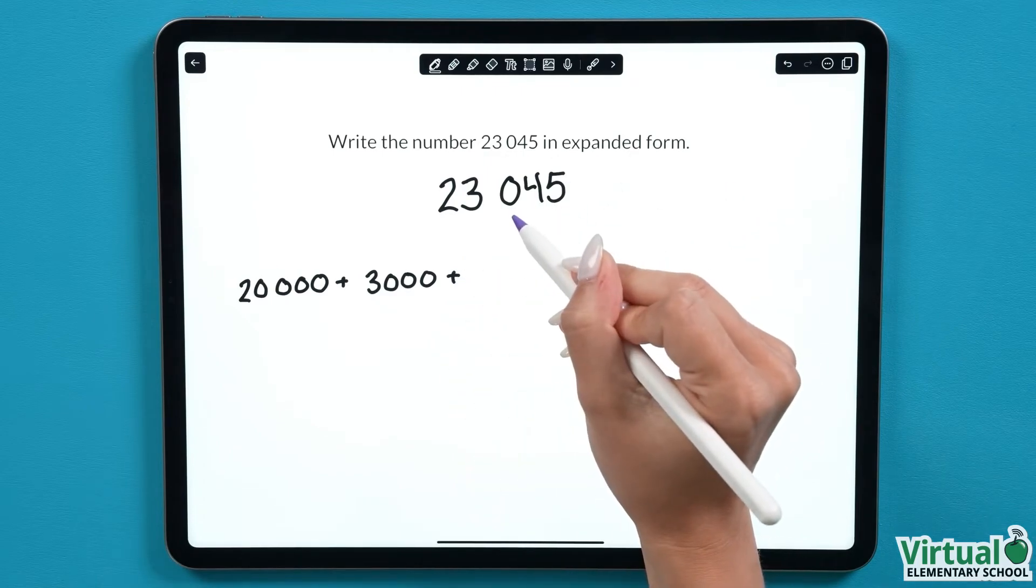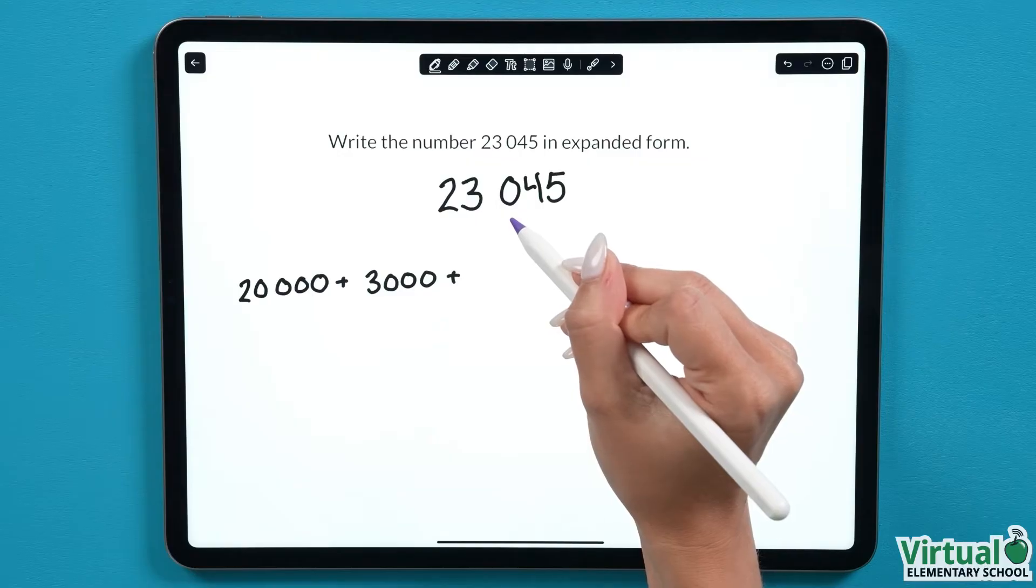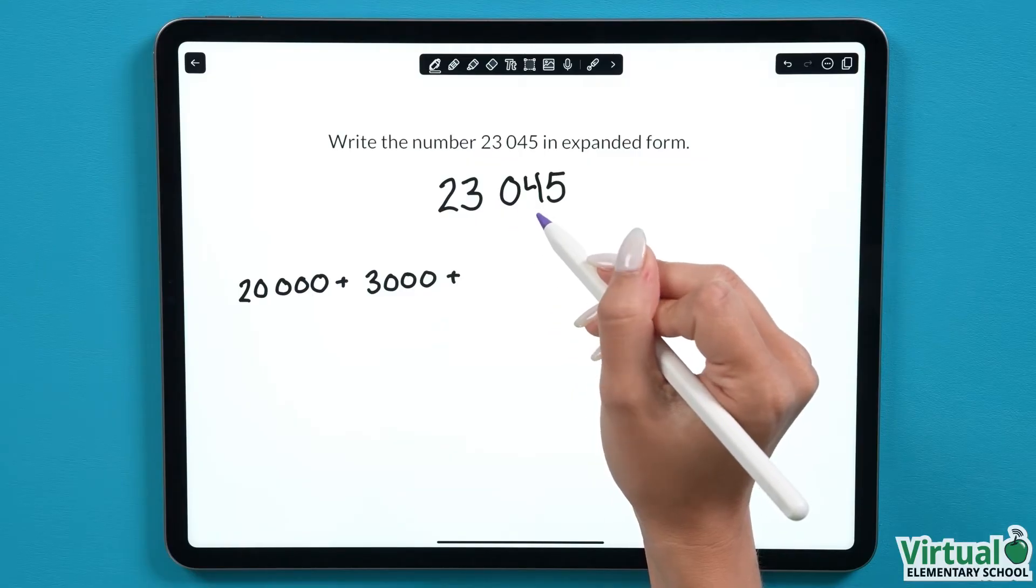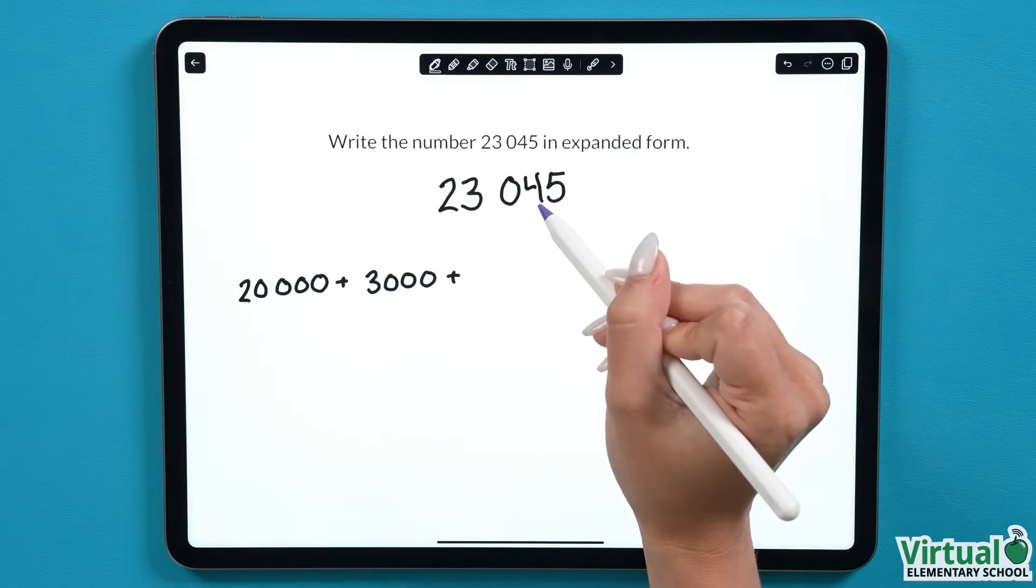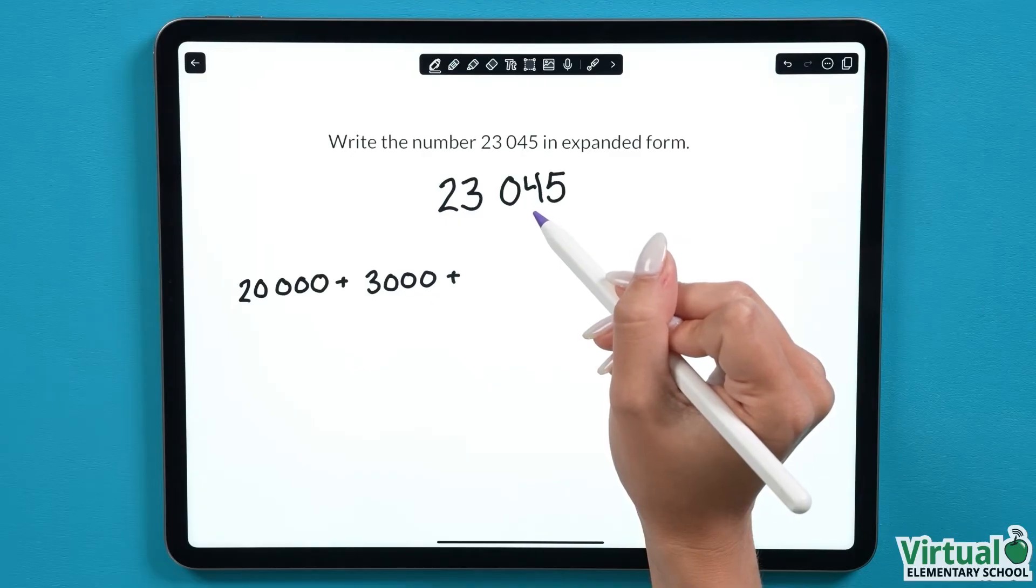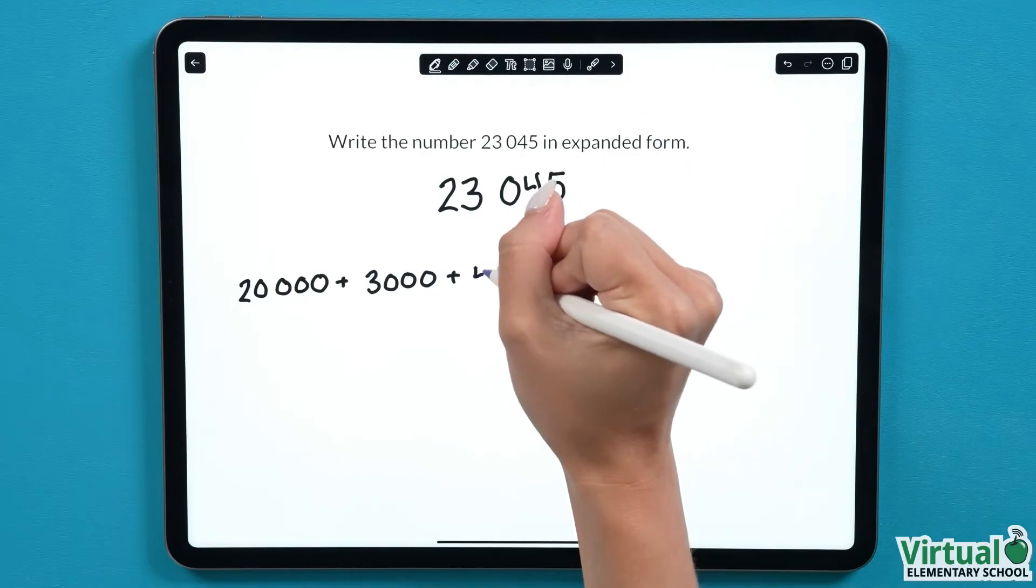Now we see that there's a 0. If the number has a 0 in the place value, this place value is simply ignored or not mentioned, so we can move on to our next value. Now we see a 4. We write this number as 40 since it is in the tens column.